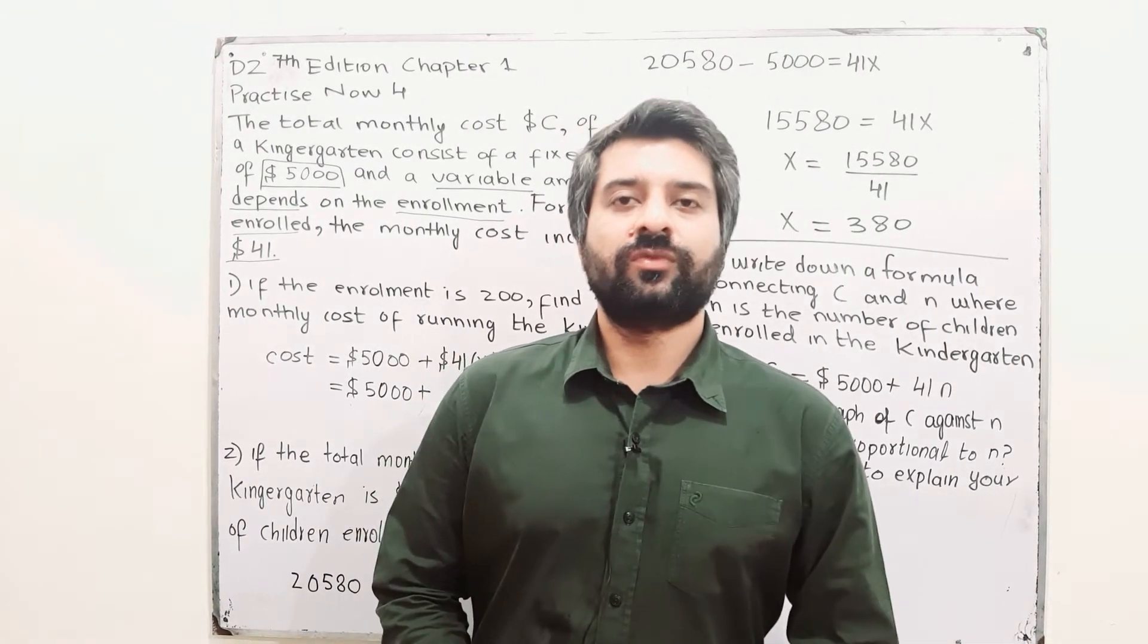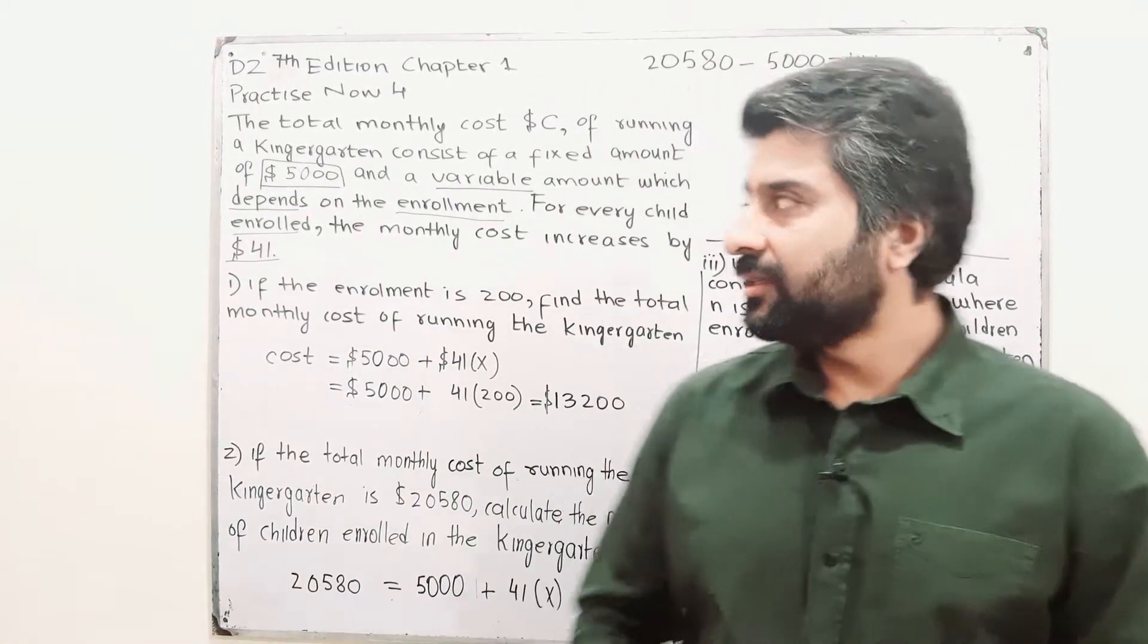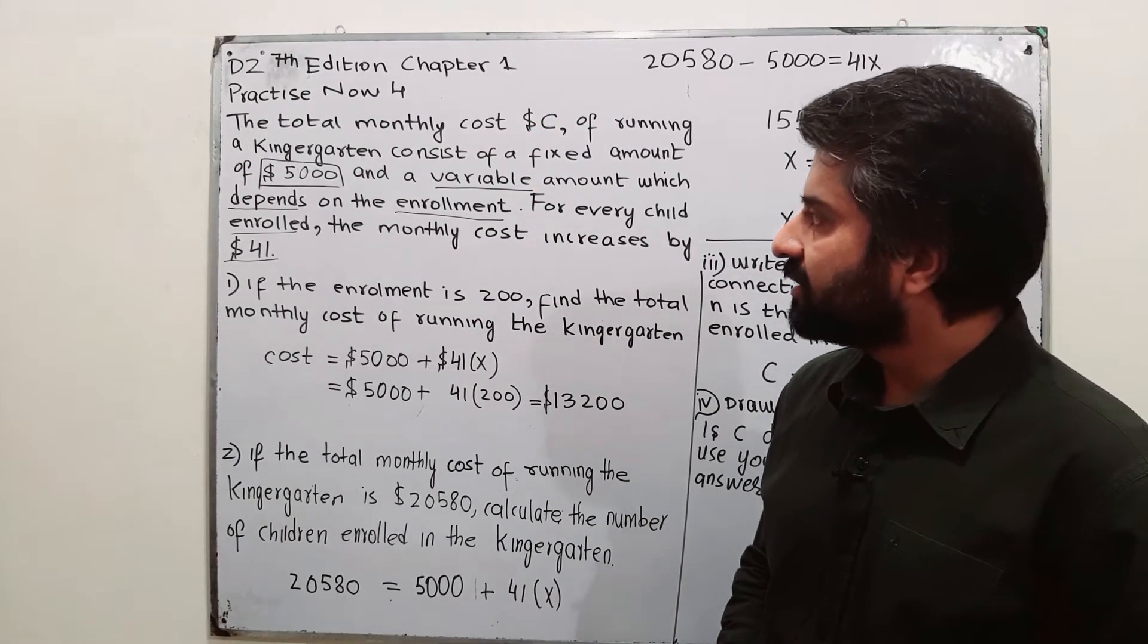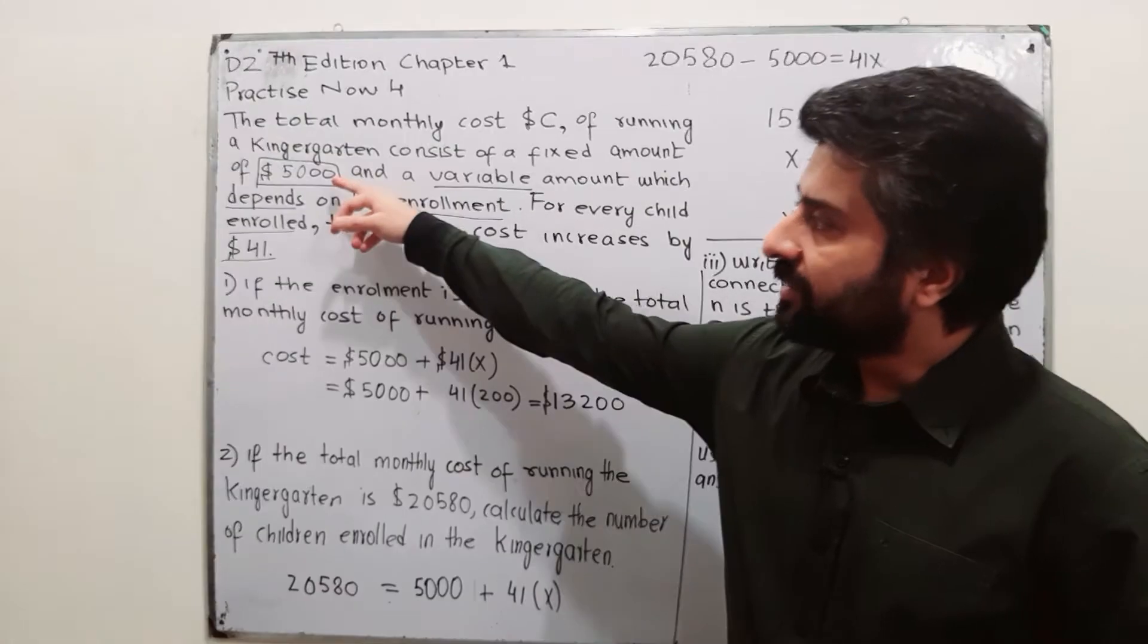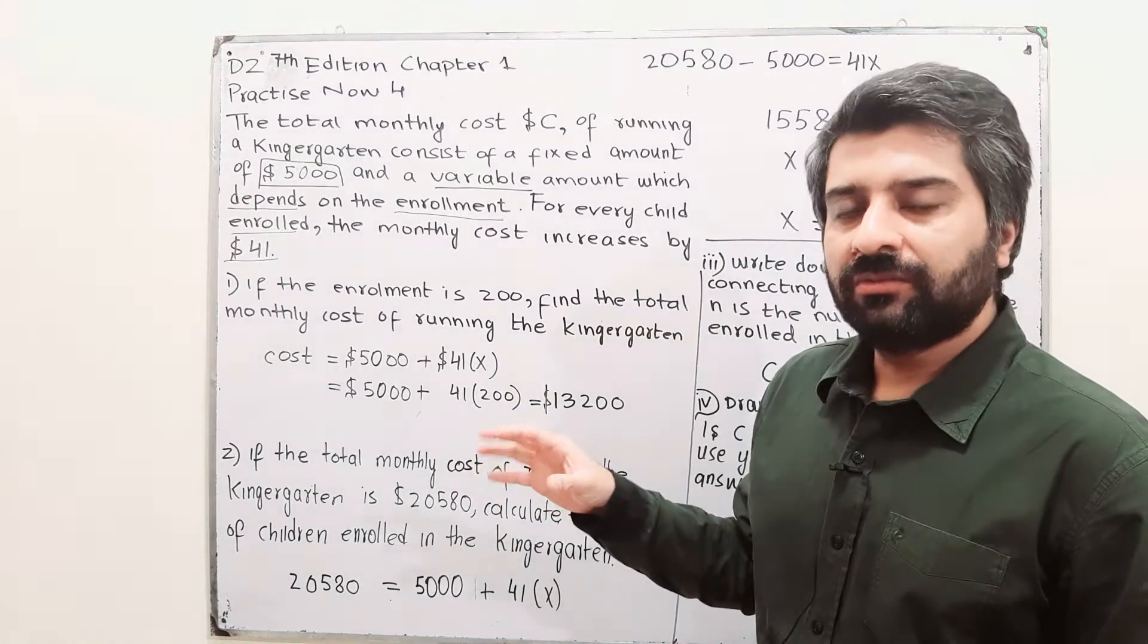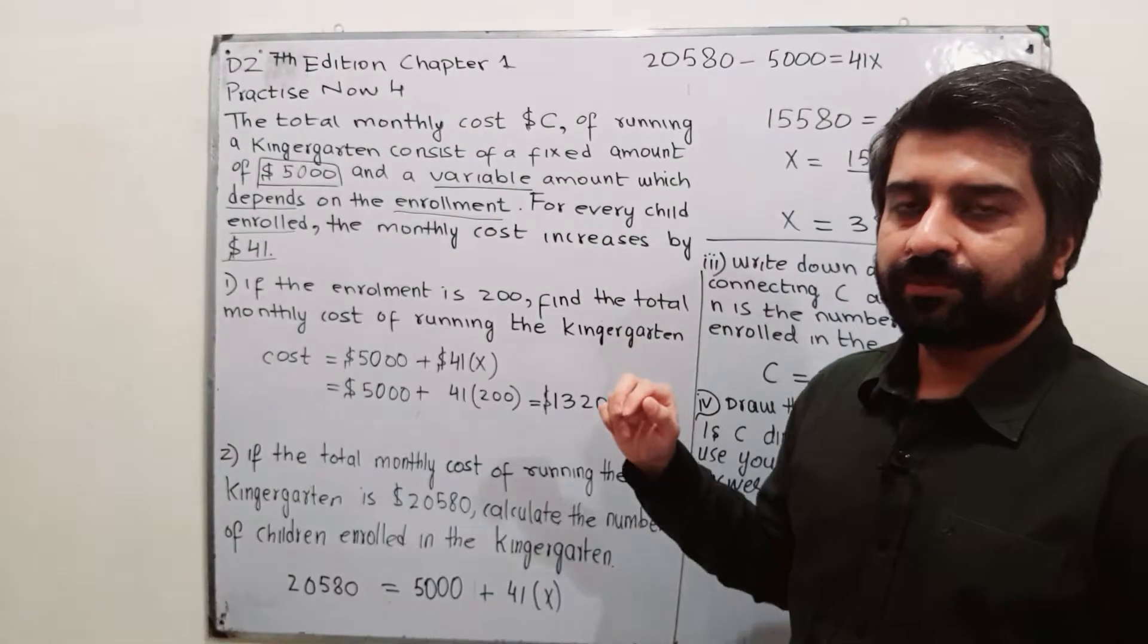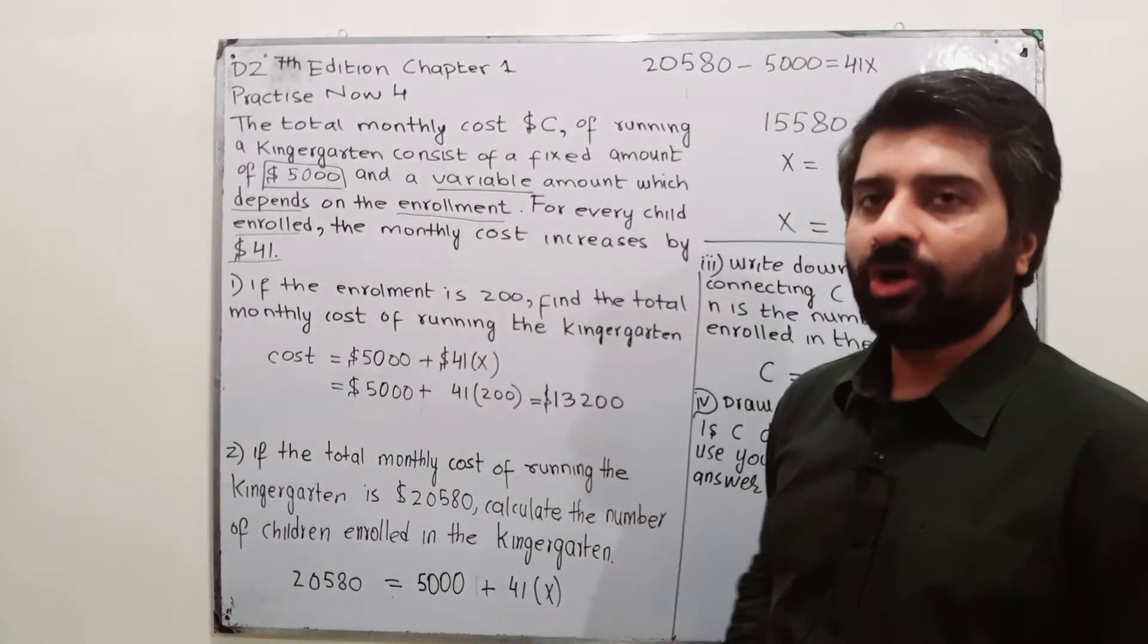Topic is of direct proportion and the question is that the monthly, total monthly cost that is represented by C dollars of running a kindergarten consists of a fixed amount that is $5,000. This is fixed amount, this will be included in monthly cost each month and a variable amount and this variable amount depends on the enrollment.